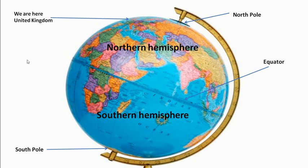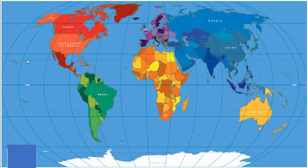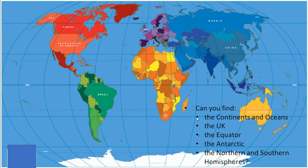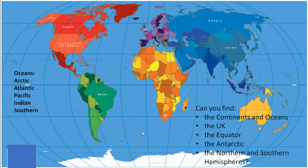Now we're looking at a map instead of a globe, and I've got a few questions for you which relate to your first task that you're going to complete and send to me. Here's a map of the world and I want you to see if you can find the following things: the continents and the oceans, the UK, the equator, the Antarctic, and the Northern and Southern Hemispheres. The continents — you know a song to help you remember all seven. For the oceans you may not know them, so here's the list: the Arctic, Atlantic, Pacific, Indian, and Southern Oceans.